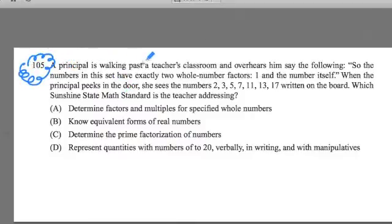A principal is walking past a teacher's classroom and overhears him say the following. So the numbers in the set have exactly two whole number factors: one and the number itself. When the principal peeks into the door, she sees the numbers 2, 3, 5, 7, 11, 13, 17 written on the board.